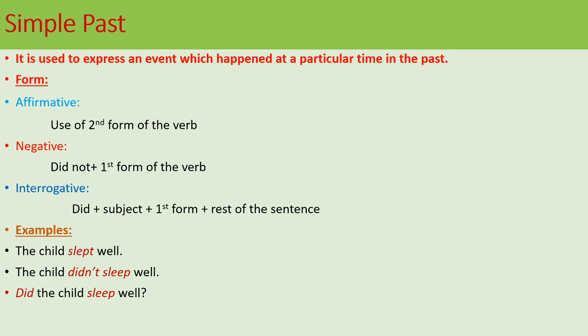Simple past tense is denoted by the second form of the verb, and it is used to express an event which happened at a particular time in the past. In affirmative sentences we use the second form of the verb, and if we convert it into negative form, we make use of 'did not'. With 'did' we use the first form of the verb. In interrogative sentences, 'did' comes at the beginning of the sentence, and we also use the first form of the verb. For example: 'The child slept well.' Its negative: 'The child did not sleep well.' And the interrogative: 'Did the child sleep well?'